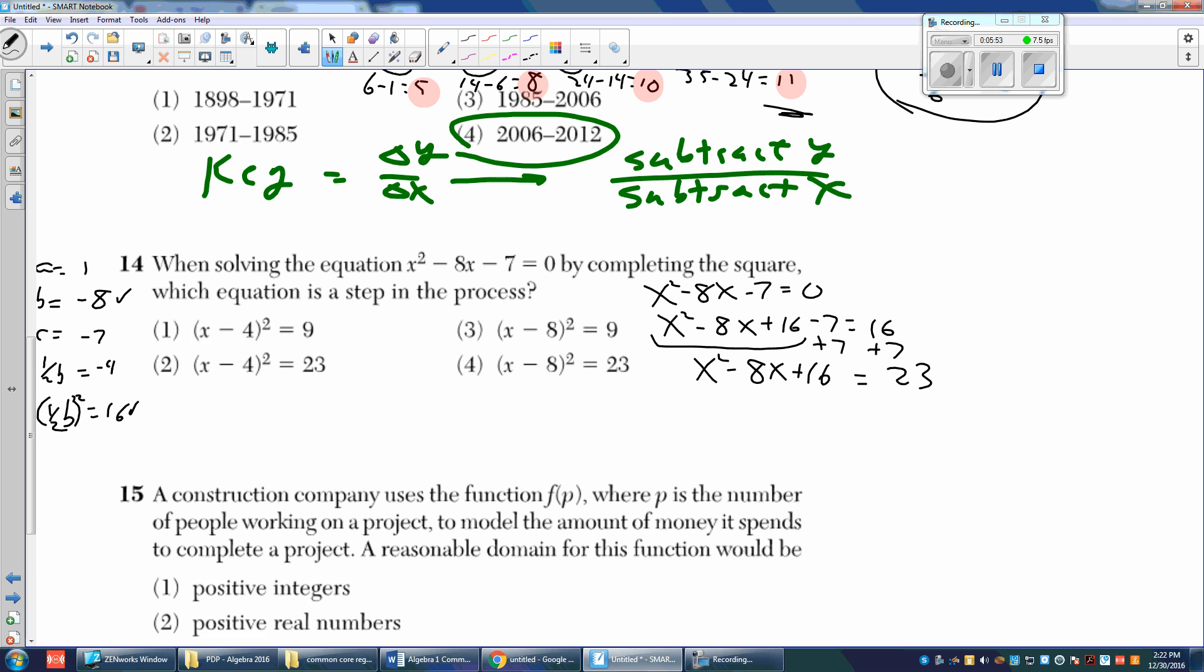Now I immediately know that the choice is going to be 2 or 4. I factor this. Remember, it's going to be parenthesis X and then plus half of B, plus negative 4 squared. Don't forget your exponent squared equals 23. Well, that's not one of the choices, but when you're adding a negative, it's the same thing as subtracting. So the answer is choice 2.